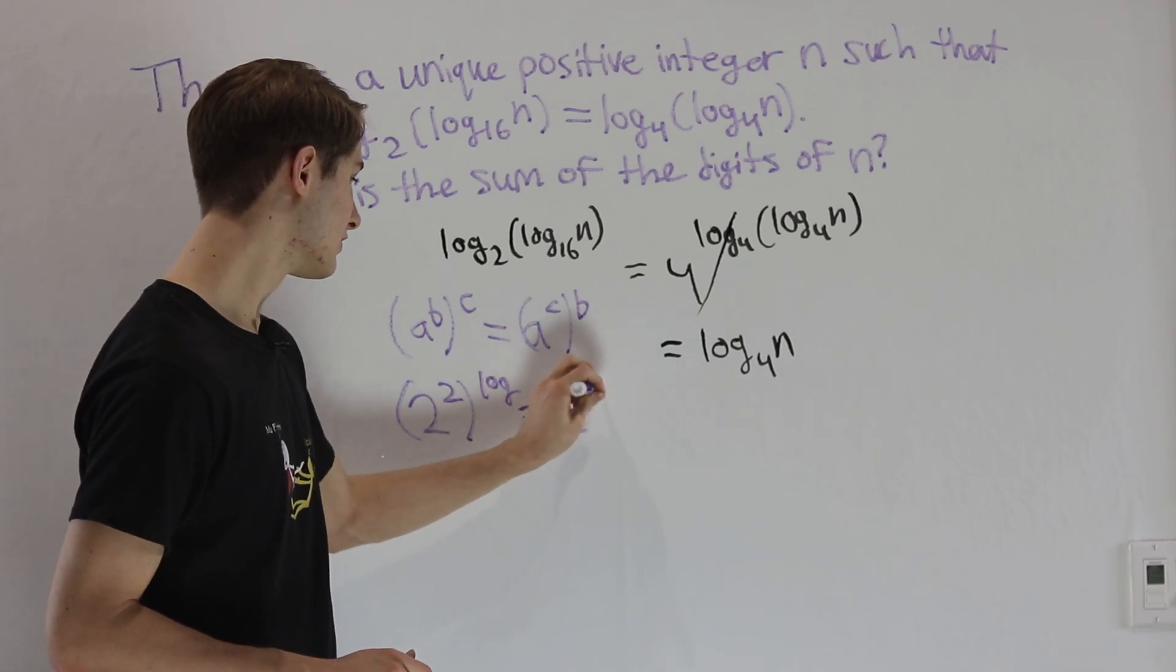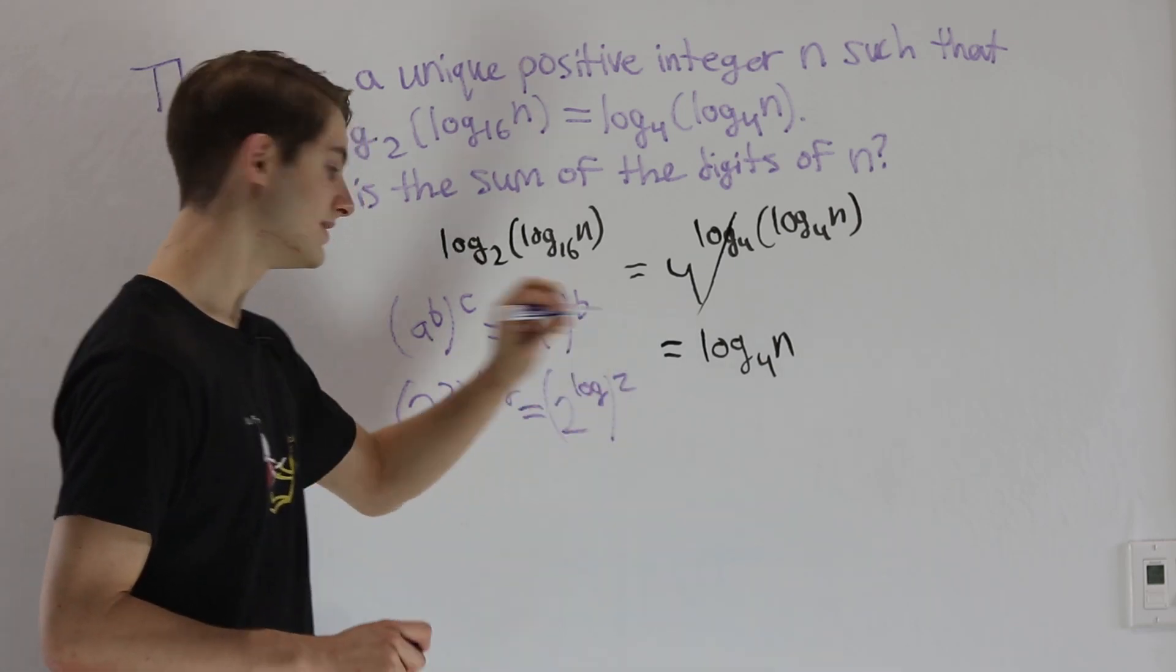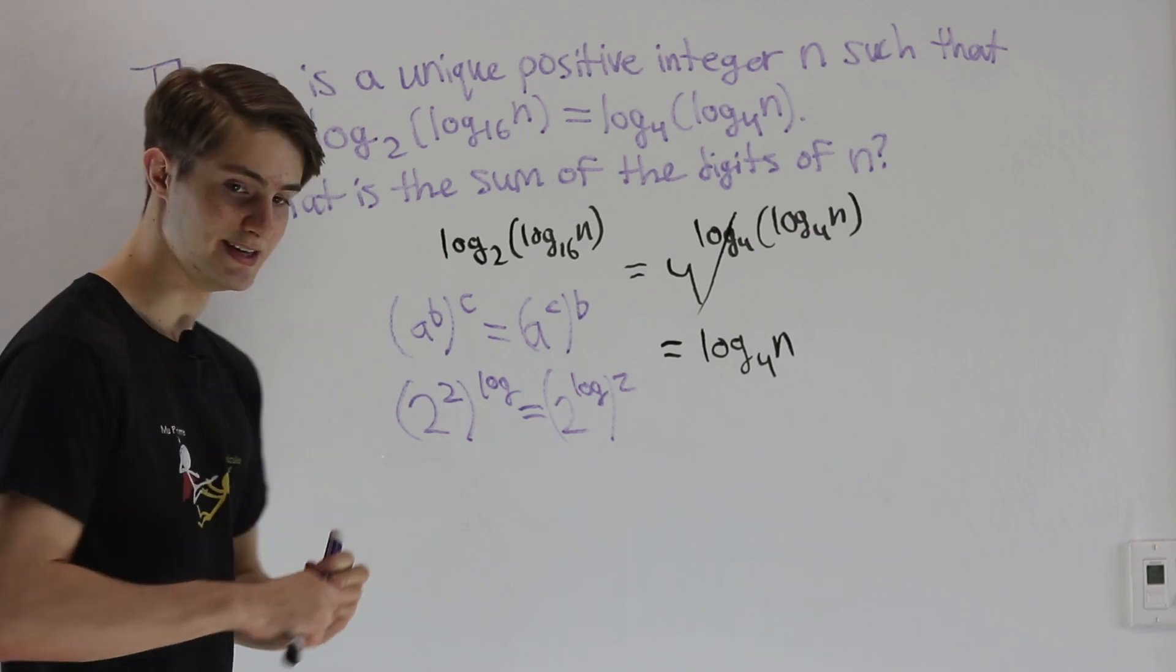So 2 squared to the power of our logarithm is the same as 2 to the power of our logarithm and then squared. That's the key step.